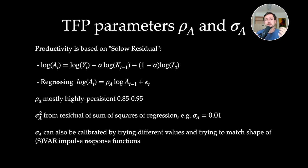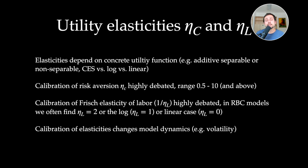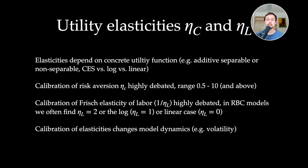Now let's look at the utility function elasticities eta_c and eta_l. Which elasticities you have depends on the utility function. With log utility these elasticities are just equal to one. With CES utility in additive separable form, eta_c is the risk aversion parameter. How to set risk aversion is highly debated in the literature and you find all sorts of values.